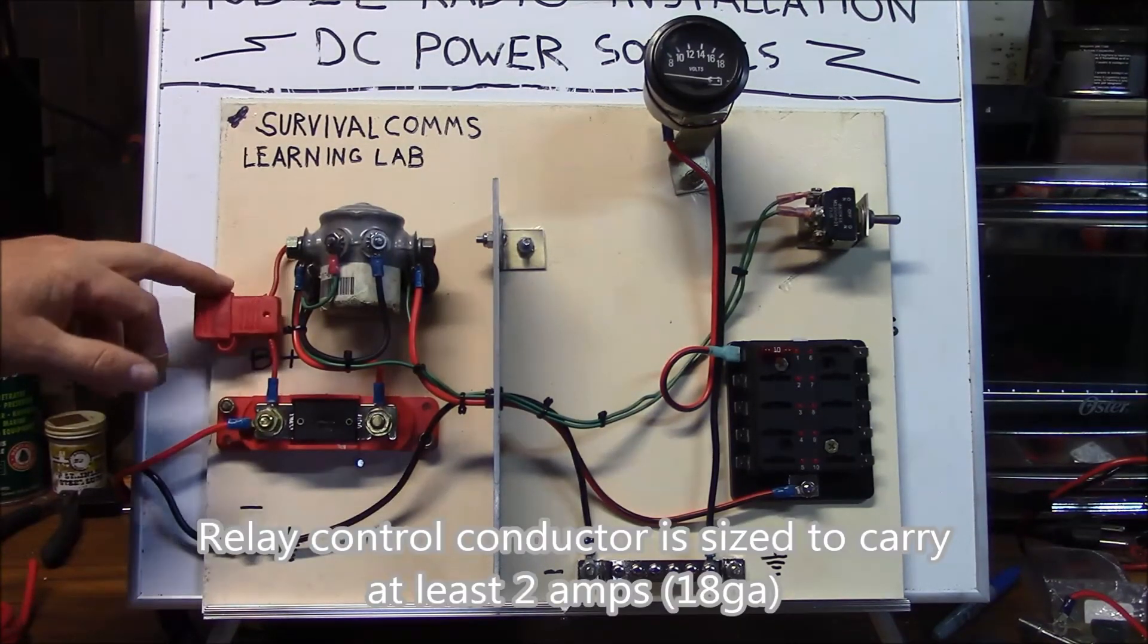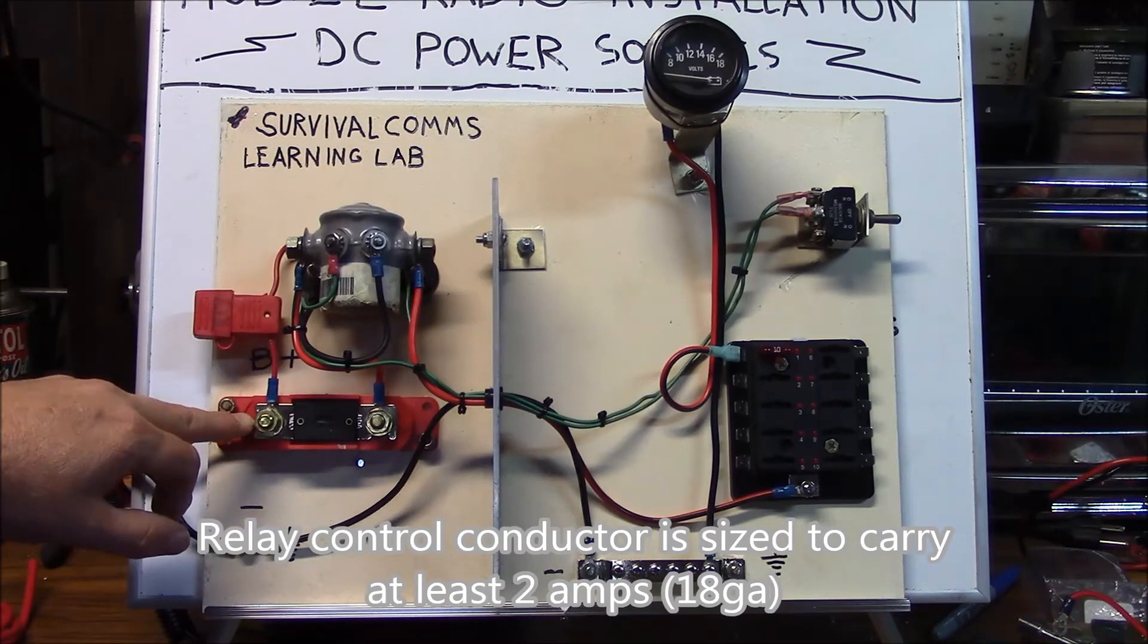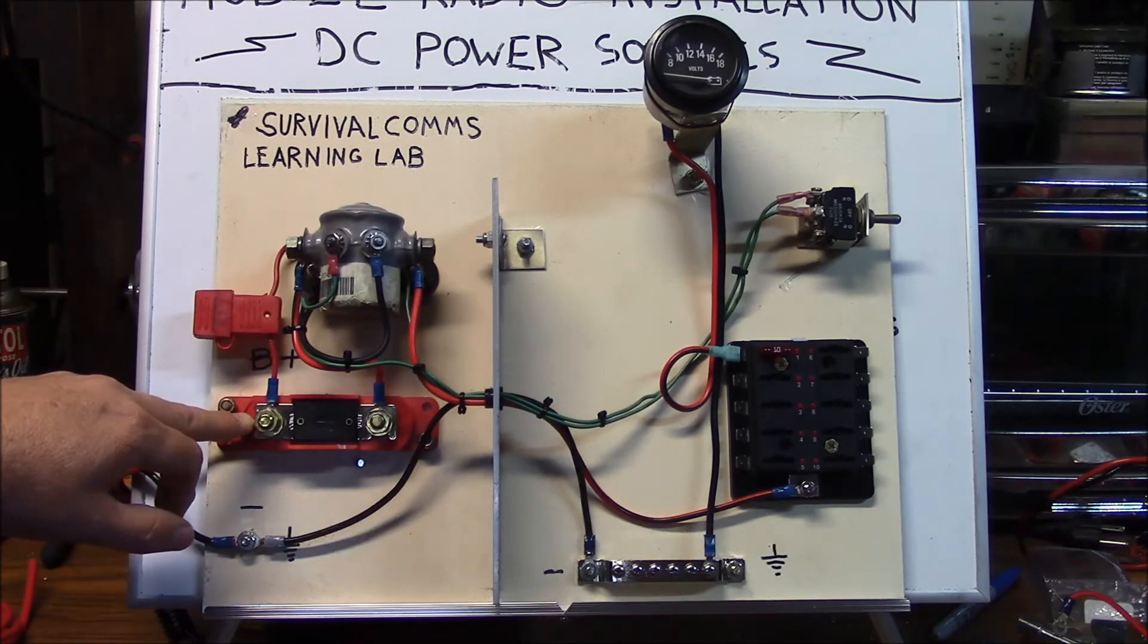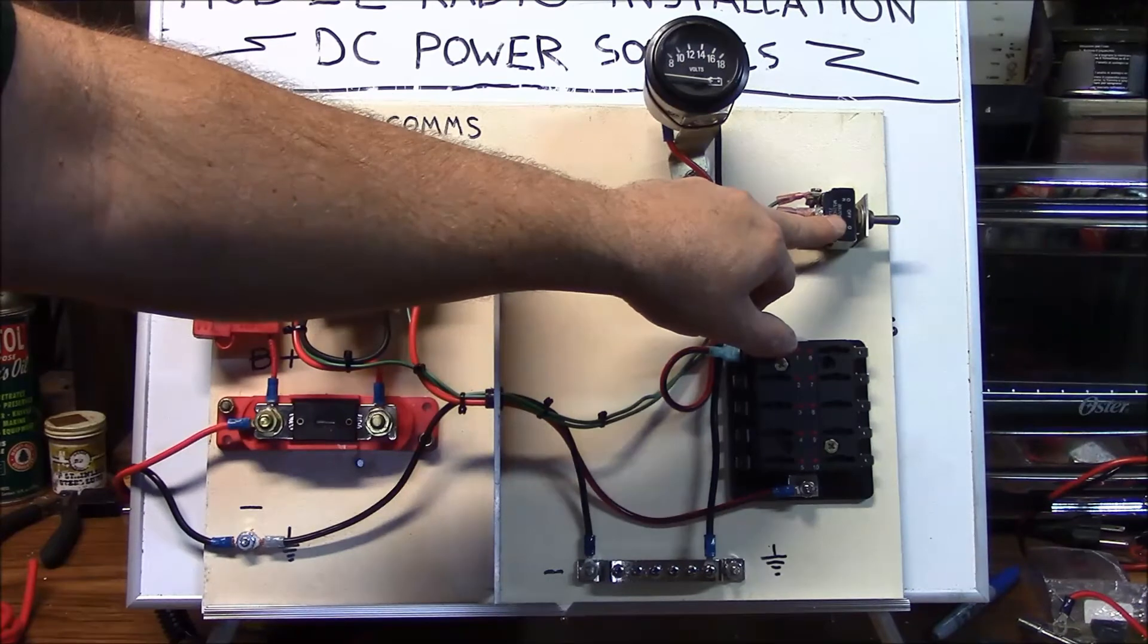To power the relay, I've installed a 2 amp fuse. The 2 amp fuse is fed off of the source side of the master fuse and runs to one pole of the switch.